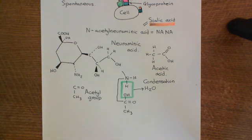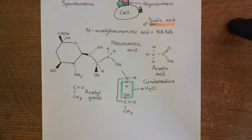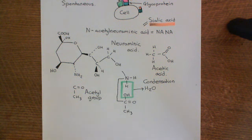Our cells have C3B inhibitors and sialic acid sugars on their surfaces, both of which inhibit C3B if it binds to the cell. Invading microbes, however, do not have these things on their cell surface membranes. So when C3B binds to glycoproteins on a microbe's membrane, it will continue on with the pathway, which we'll discuss in the next video.